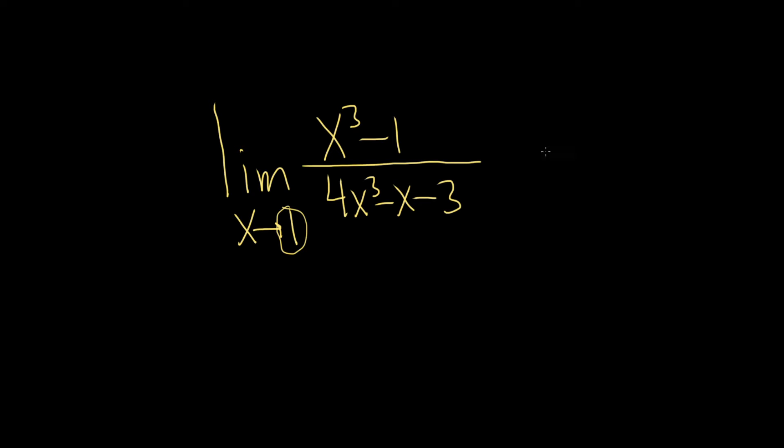So if we do that, we'll get 1 cubed minus 1 divided by 4 times 1 cubed minus 1 minus 3. So it'll be 1 minus 1, which is 0, over and then 4 minus 4, which is also 0. So this is called an indeterminate form, and this one in particular is special.